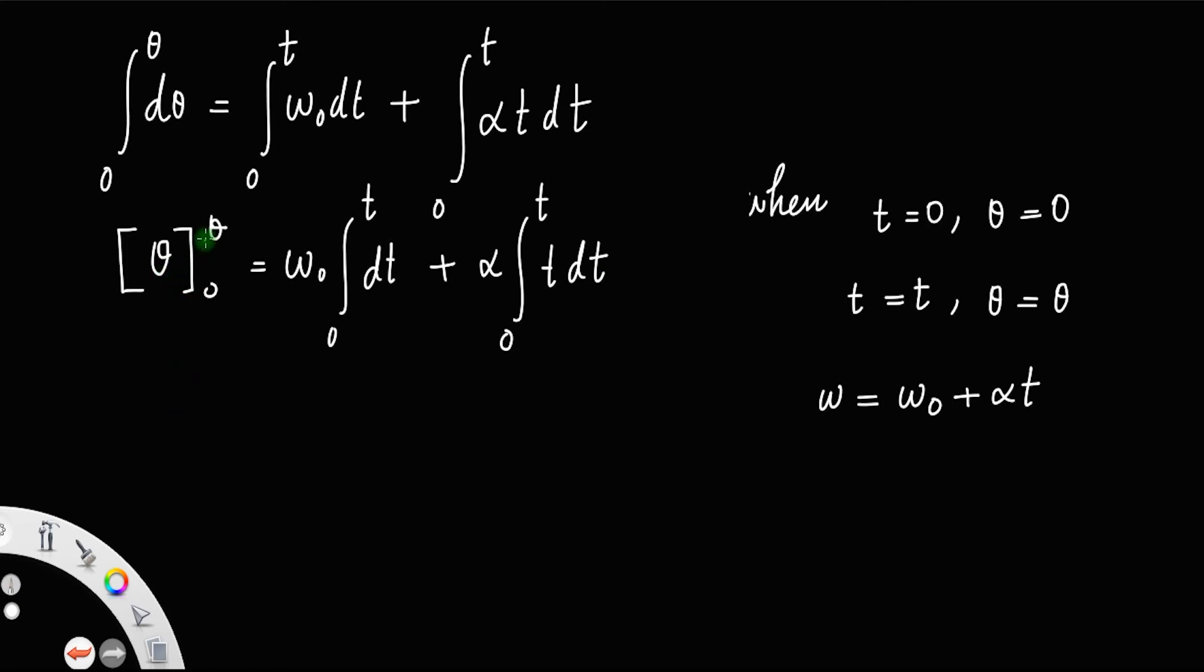This equals [θ] from 0 to θ equals ω₀[t] from 0 to t plus α[t²/2] with the lower and upper limits.